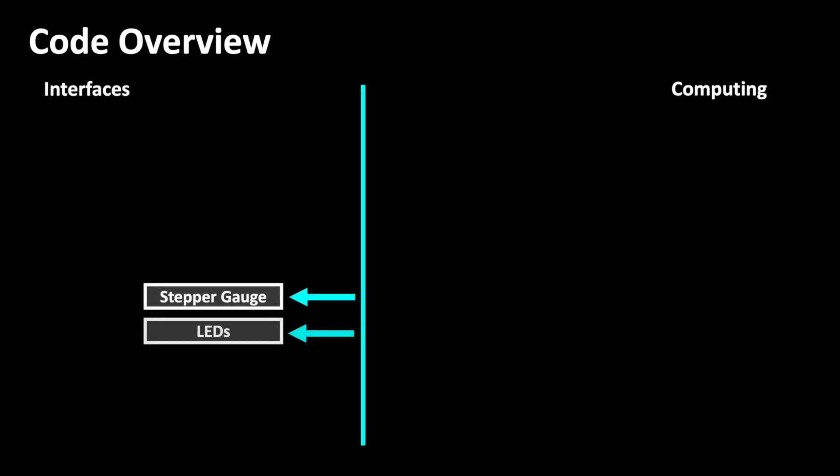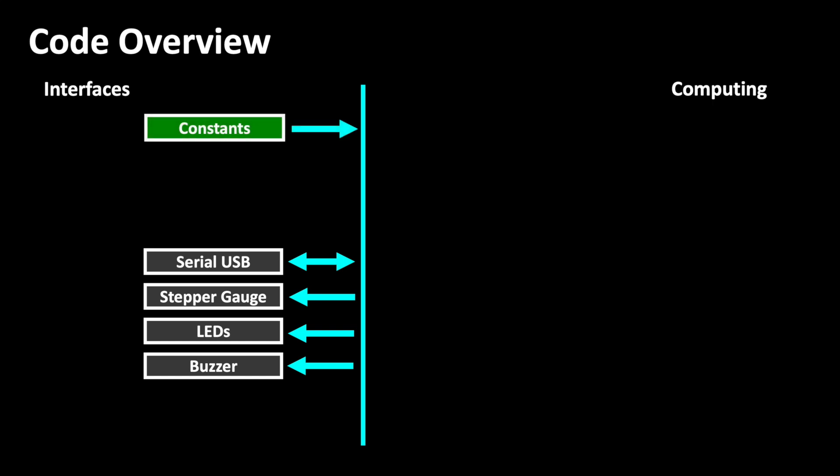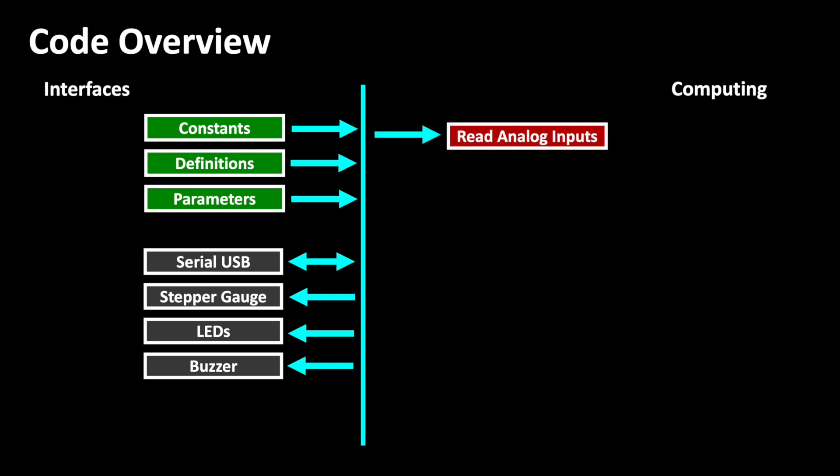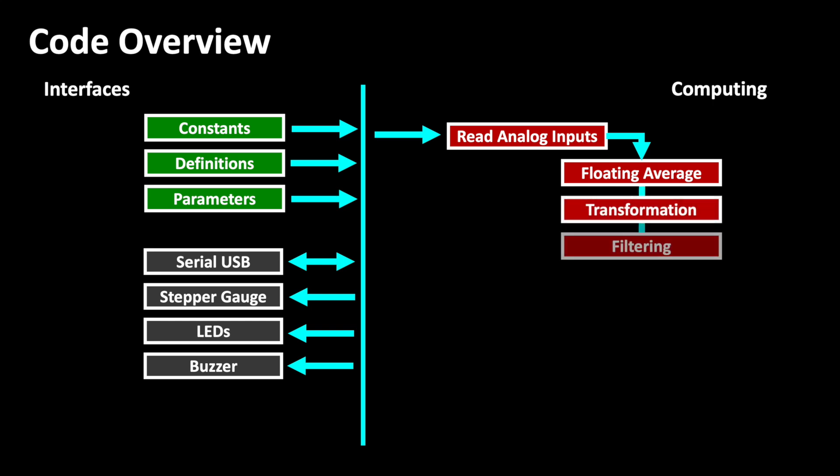Our stepper pointer, LEDs and the buzzer are the motorist's interface. The code is loaded via USB, defining the type of instrument and all adaptation parameters, including the desired rotation direction. The voltages measured are processed digitally. Floating averaging prevents our pointer from constantly fluctuating through fuel sloshing in the tank for example. Next come the transformation as well as filtering.